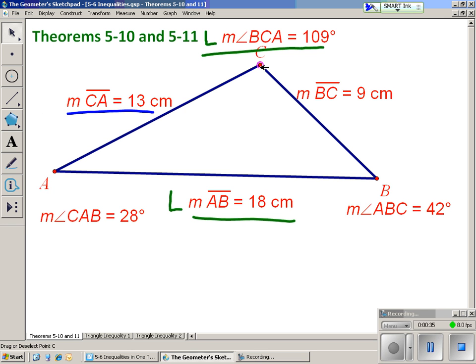CA is the side length that's in the middle, and it's across from the angle that's in the middle.